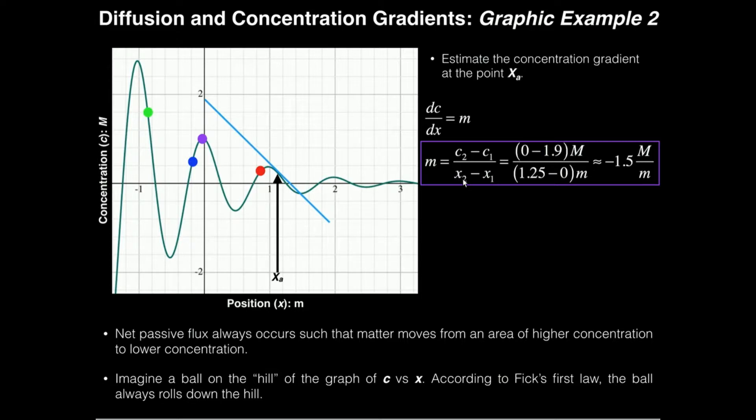Now let's look at the x's. What's our x position right here at our second point? It might be about 1.25. Then what's our x position at our other point? Well this has an x of zero right here because it's on the c intercept. Now we just calculate zero minus 1.9 in units of molar, and x's are going to be 1.25 minus zero in units of meters. When you calculate this you get approximately negative 1.5 molar per meter and this is our concentration gradient.